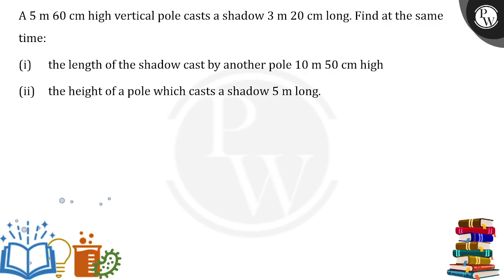In this case, a 5 meter 60 centimeter high vertical pole casts a shadow 3m 20cm long. Find at the same time the length of the shadow cast by another pole of this much length.